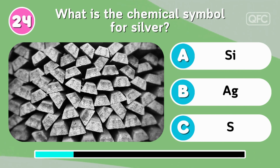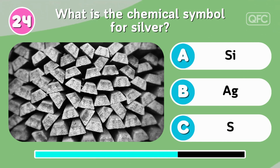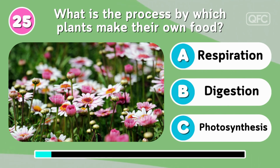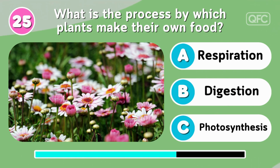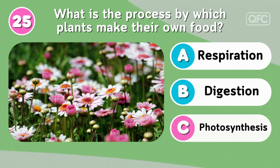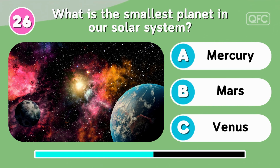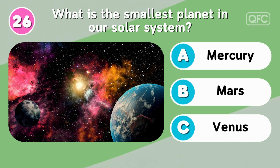What is the chemical symbol for silver? AG. What is the process by which plants make their own food? Photosynthesis. What is the smallest planet in our solar system? Mercury.